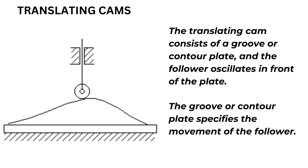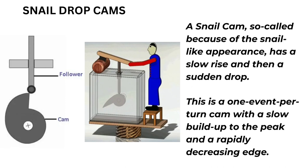Translating cams: the translating cam consists of a groove or contour plate, and the follower oscillates in front of the plate. The groove or contour plate specifies the movement of the follower. Snail drop cams: a snail cam, so called because of the snail-like appearance, has a slow rise and then a sudden drop. This is a one event per turn cam with a slow build up to the peak and a rapidly decreasing edge.